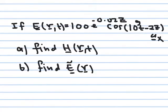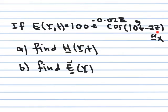Moving to another example: the electric field is given as E = 100 e^(−0.02z) cosine(10^9 t minus 2z) a_x. E is in the x-direction, the wave travels in the z-direction due to the negative sign between t and z. Something different about this wave is that it is multiplied by the factor 100 e^(−0.02z).